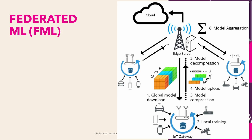IoT networks face unique challenges such as limited bandwidth, power constraints and data privacy concerns. To overcome these challenges, federated learning techniques are necessary to enable efficient and secure processing and analysis of data on IoT devices. Federated learning involves training machine learning models on distributed IoT devices. These models can be trained collaboratively and share updates with a central server, resulting in improved accuracy without compromising data privacy. By training models locally, IoT devices can leverage their computing capabilities, enabling real-time decision making and reducing dependency on centralized resources.